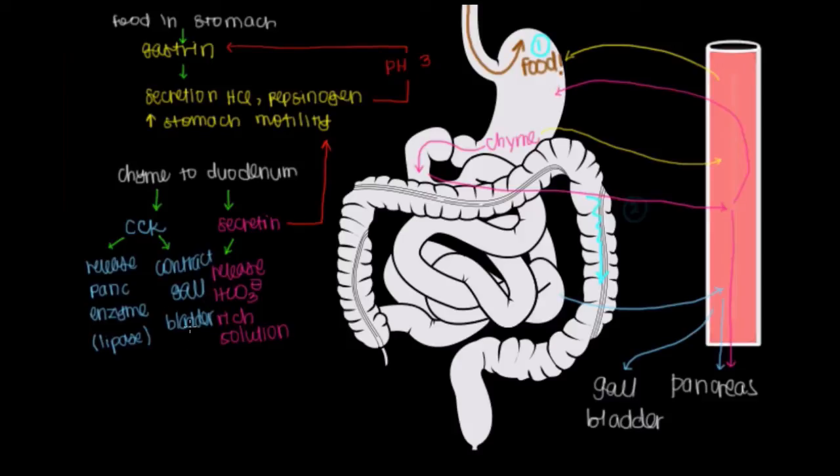Well, if you remember, the gallbladder is holding bile that was produced in the liver. So when you squeeze the gallbladder, you're going to pump bile out of the gallbladder into the cystic duct and down and out through the common bile duct into the duodenum. And that's going to help emulsify fat.